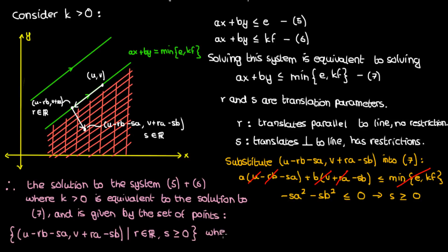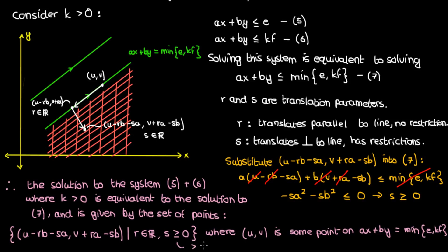Keep in mind that u comma v is just a point on the line given by ax plus by equals the minimum of e and k·f. Note that the restriction on s loses the equality if the inequality is a strict one. Now the last case we have to consider is when k is negative.